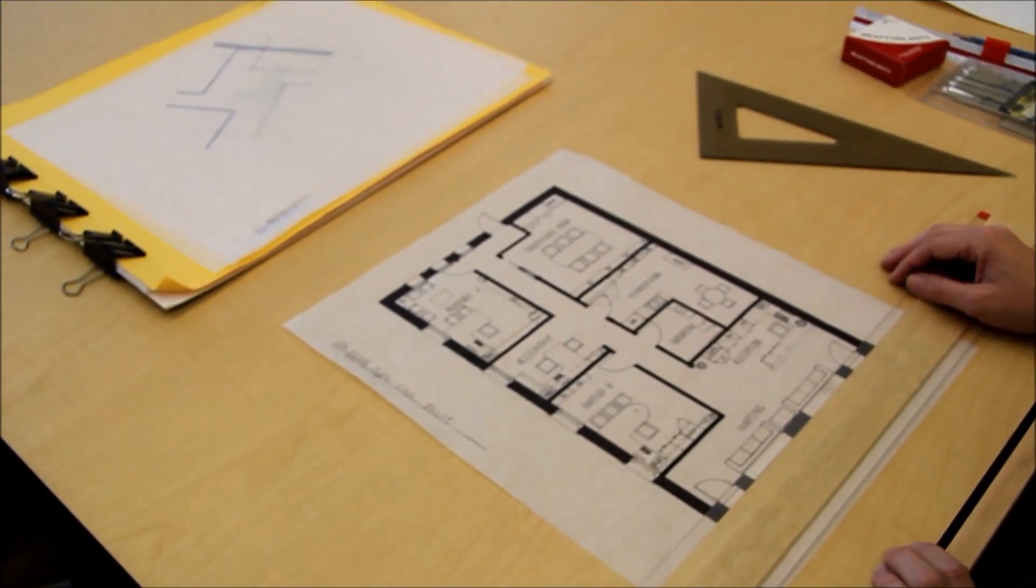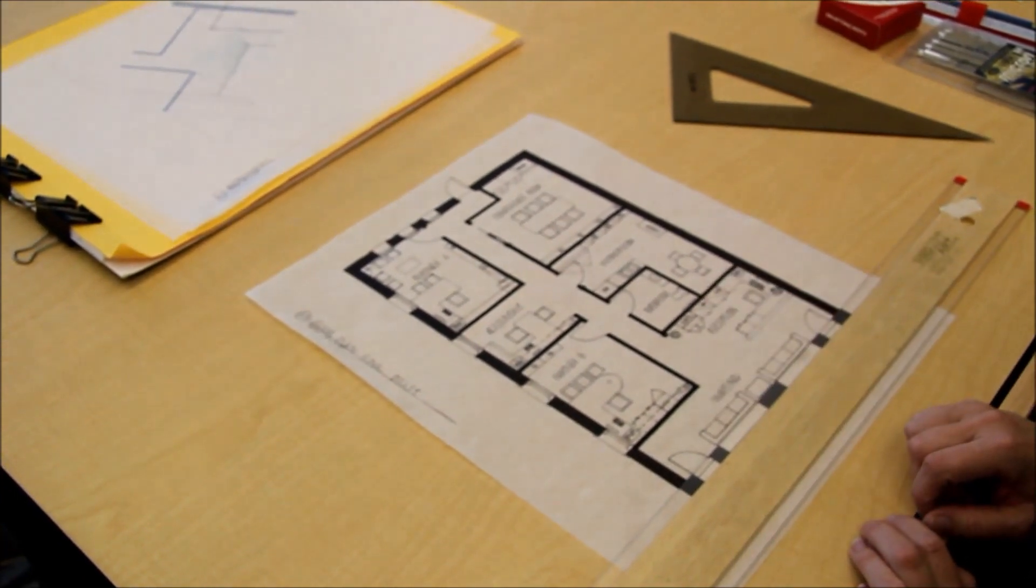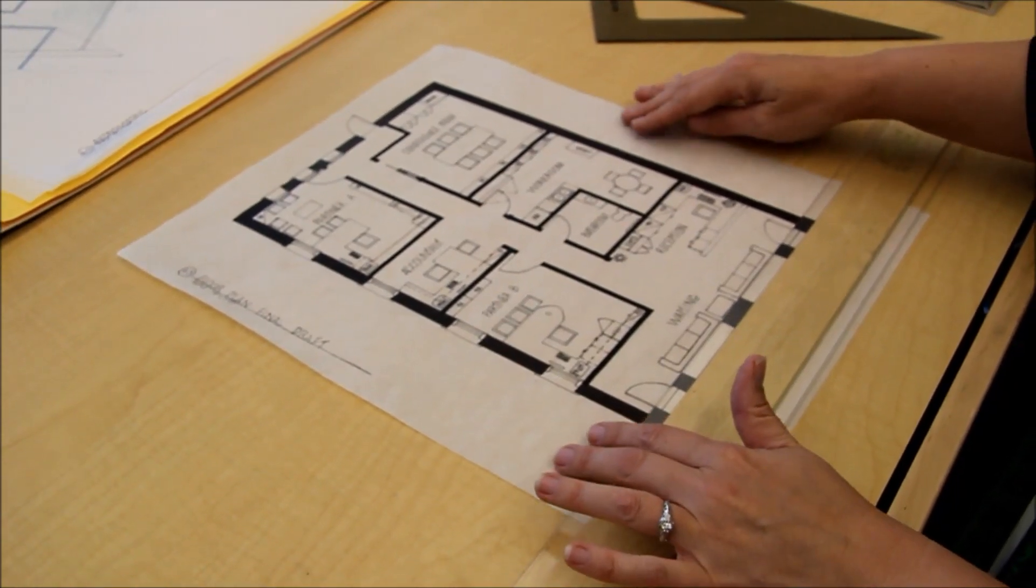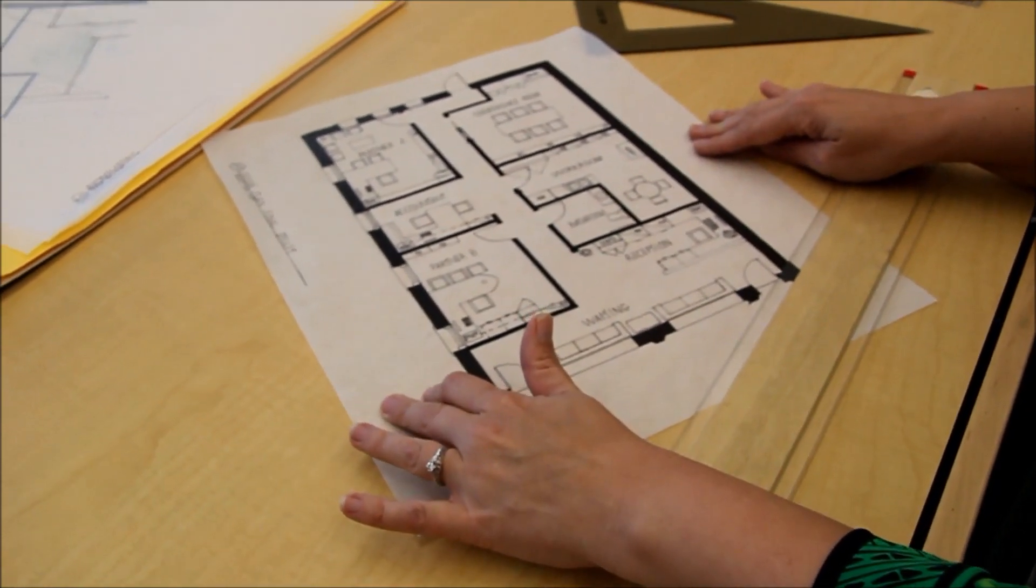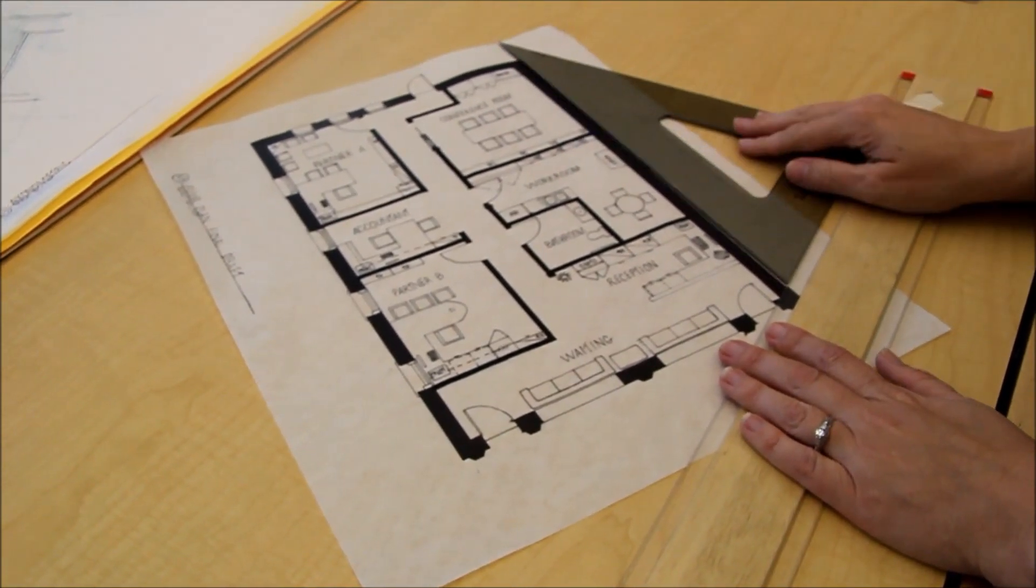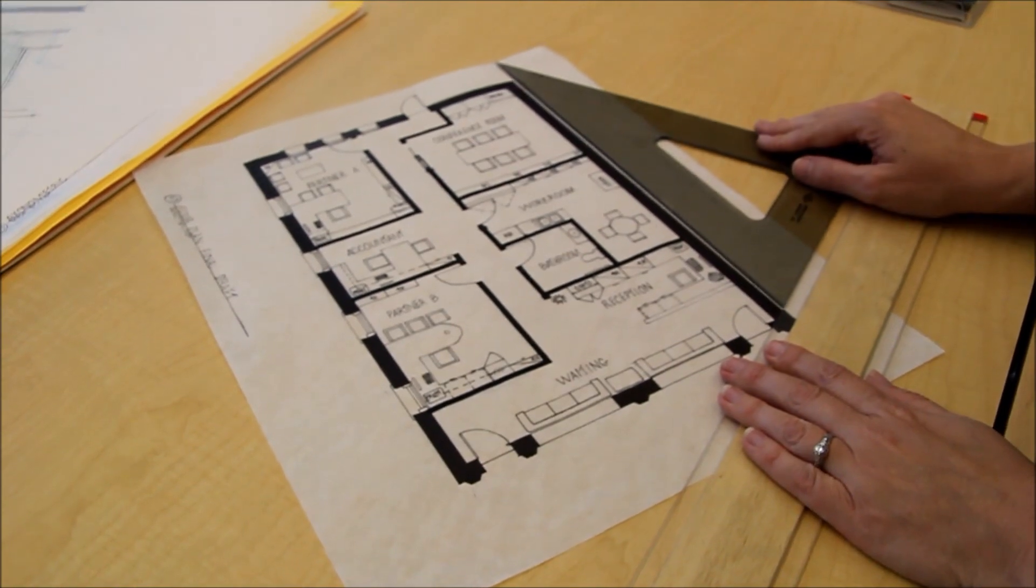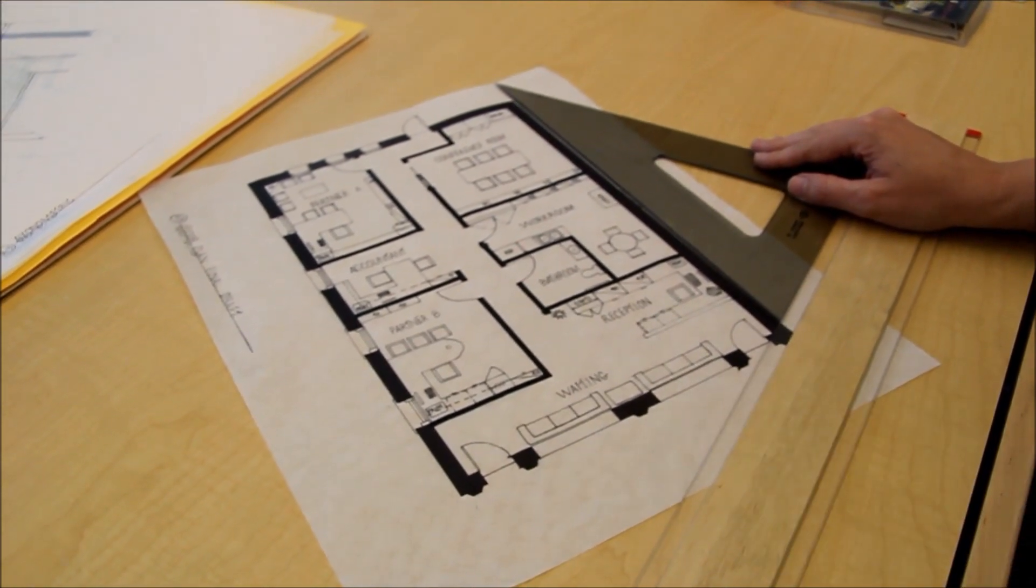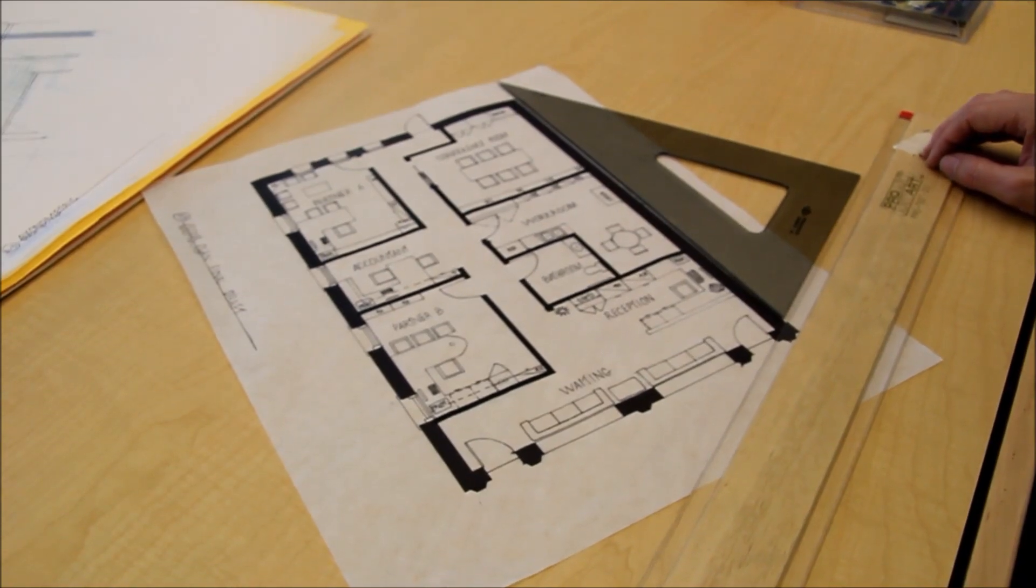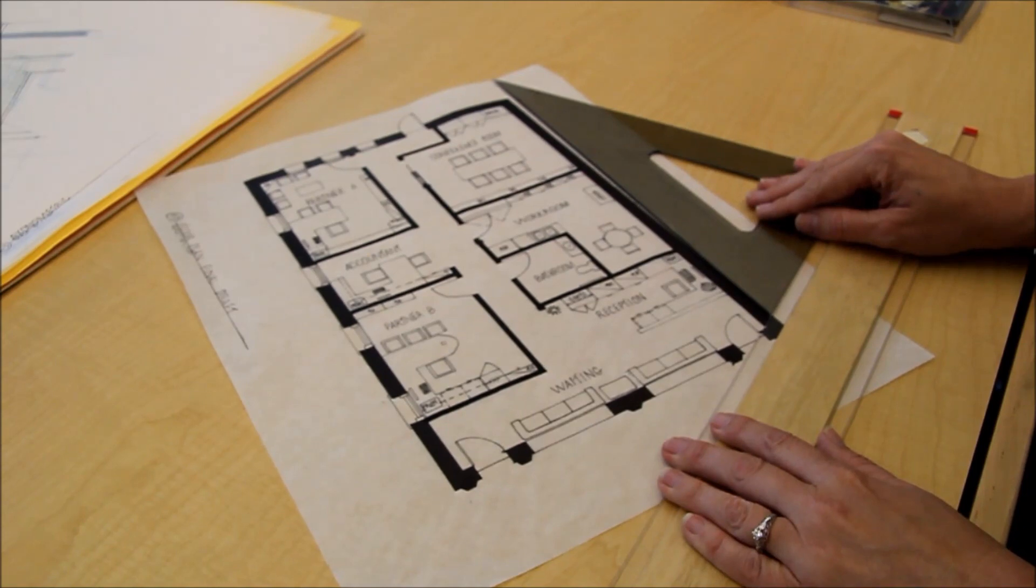So first we'll align the plan with the t-square and examine it to see which view we think we want to look at. That one looks pretty good looking that direction. So we'll turn the plan 60 degrees, use the triangle to line the plan up and make sure everything stays in place so that ultimately we can tape the plan down at this angle.